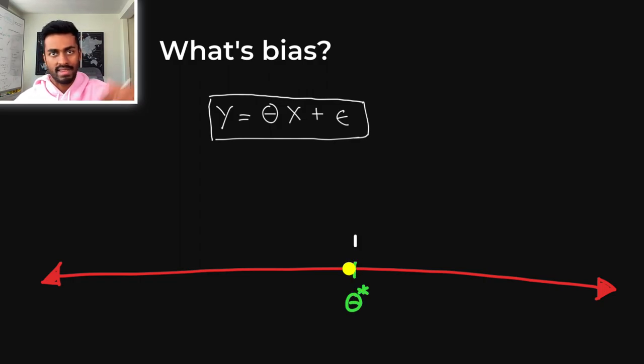And the true value of what theta should be is also 1 that we've labeled in green. So the difference between the yellow and the green is the bias. And in this case, the bias is zero, and we have the perfect model.